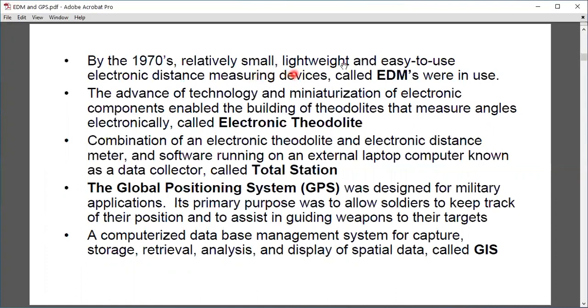By the 1970s, relatively small, lightweight, and easy to use electronic distance measuring devices called EDMs were in use. The advance of technology and miniaturization of electronic components enabled the building of theodolites that measure angles electronically. The combination of electronic theodolite, electronic distance measurement, and software running on an external data collector is called a Total Station.